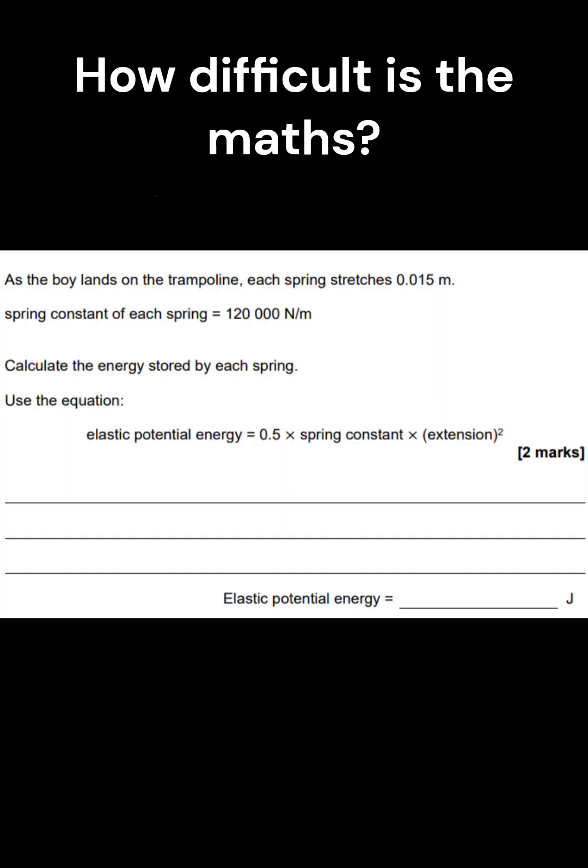It is true that physics has less written work than some of the other sciences but slightly more maths. 30% of the marks on a physics GCSE paper are maths related.